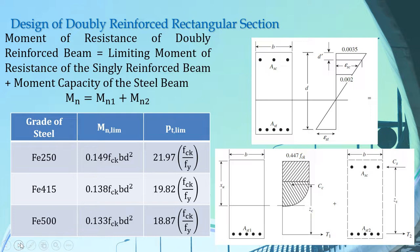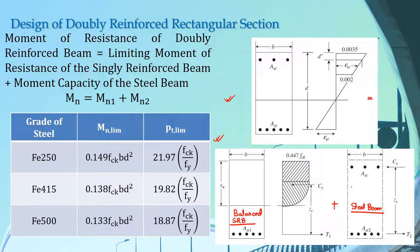Now let us discuss some design steps regarding the design of doubly reinforced rectangular beam. The diagram on the right hand side shows that our doubly reinforced beam has been divided into two parts: one is the balanced singly reinforced beam and another is the steel beam. We call it the steel beam because we only have steel here and no concrete. If the limiting moment of resistance of the balanced singly reinforced beam is MN1 and the moment capacity of the steel beam is MN2, then the nominal moment capacity of the doubly reinforced beam as a whole is MN1 plus MN2.